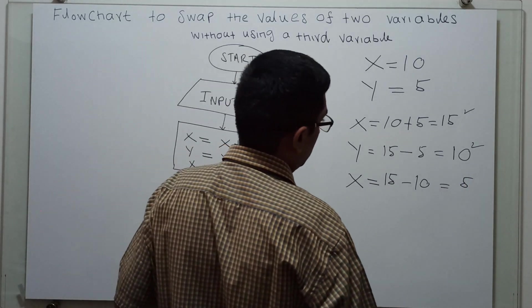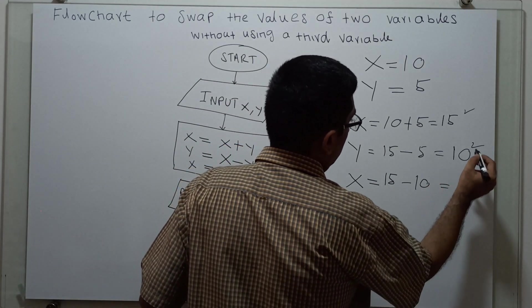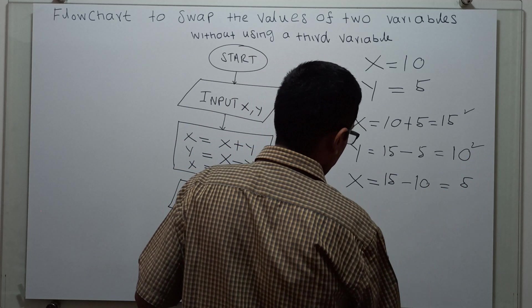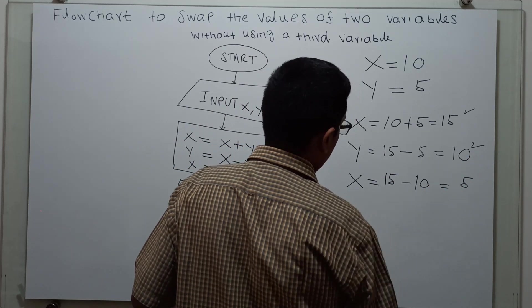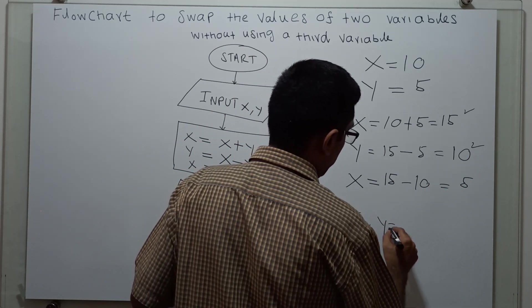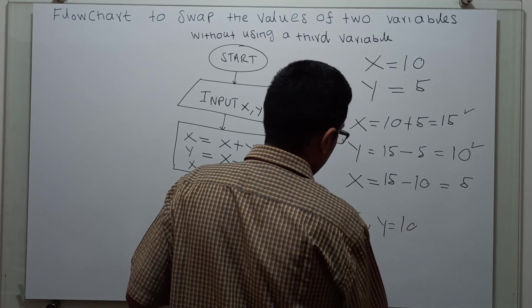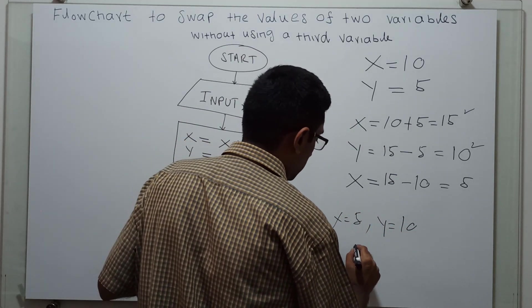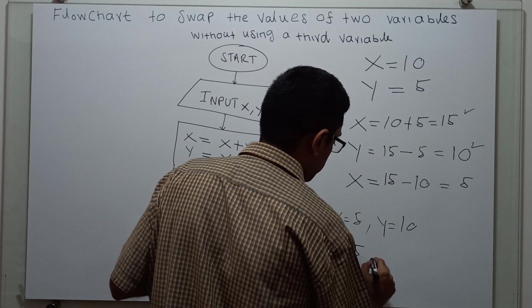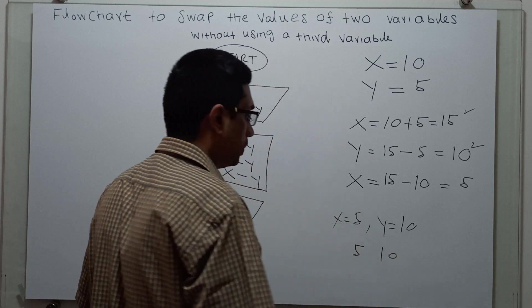And I am printing x comma y. What is the value of x? x value is now 5, and y value is 10. My output is 5 comma 10.